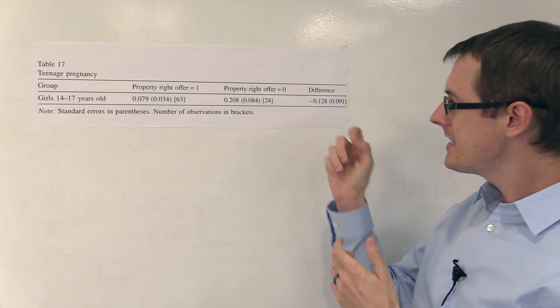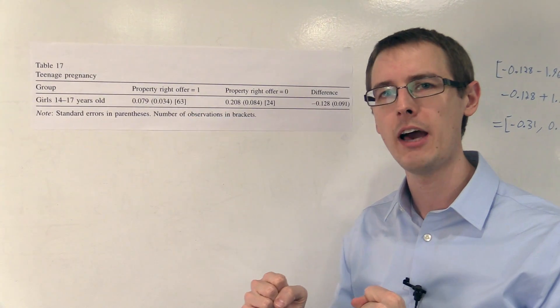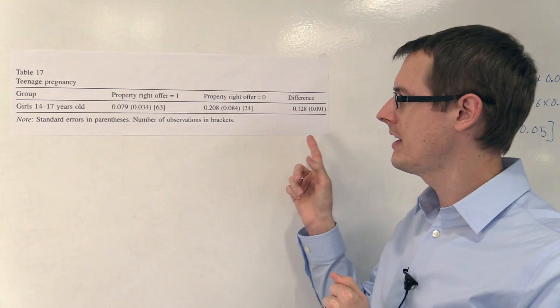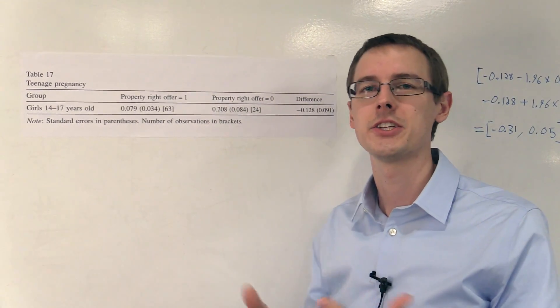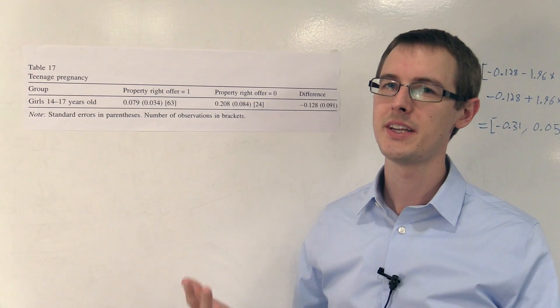So is this a real causal effect that's out there? Is that really what will happen if we give people property rights, teenage pregnancy goes down by that much? Or is this something that's just an artifact of our data, just statistical noise? Well, to answer that, we have to do some statistical inference.